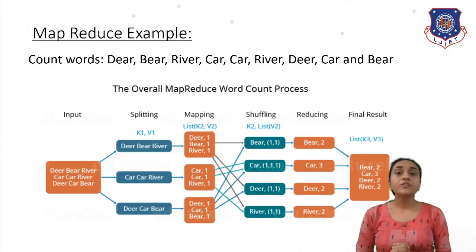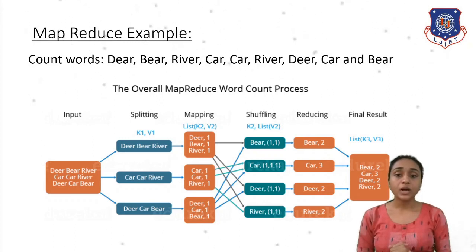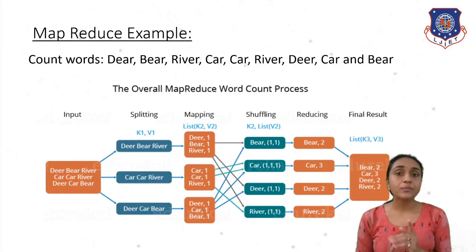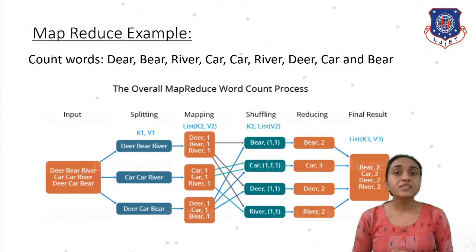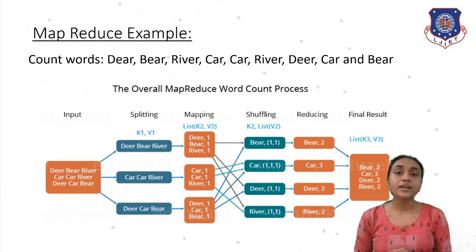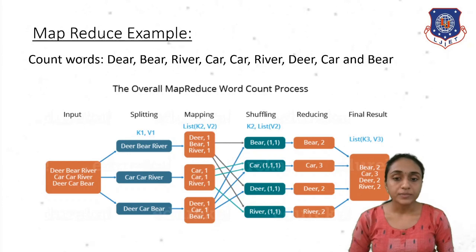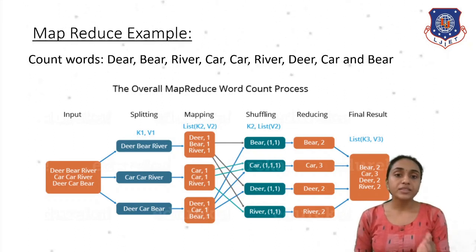First, we have the input of the original string: deer, beer, river, car, car, river, deer, car, and beer. This string is applied to the first step of MapReduce, which is splitting. After splitting, we get three chunks: the first has deer, beer, river; the second has car, car, river; and the third has deer, car, beer. These chunks are then applied to the mapping function. After mapping, we get key-value pairs: deer-1, beer-1, river-1 from the first; car-1, car-1, river-1 from the second; and deer-1, car-1, beer-1 from the third. All mapped values are then applied to the shuffling function.